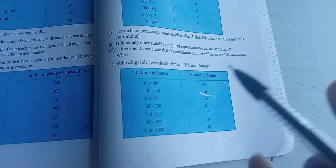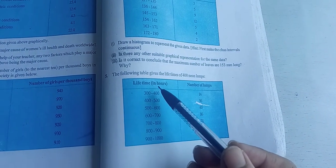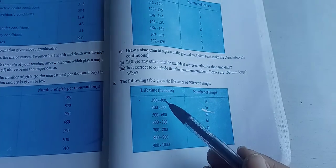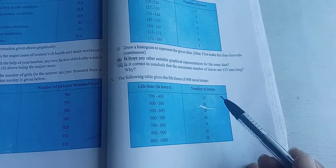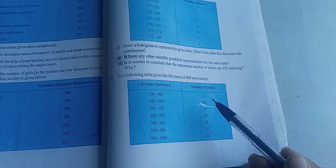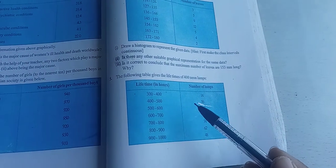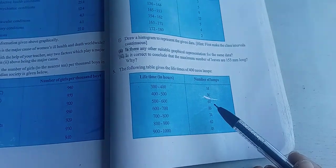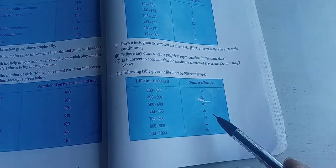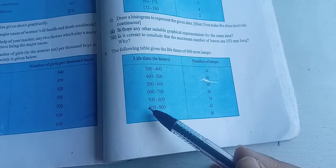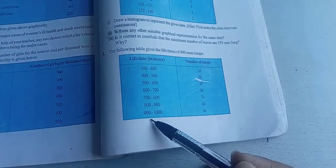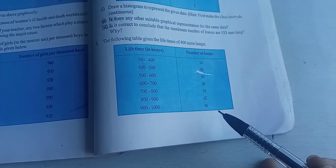Now it is given to you, lifetime of the 400 neon lamps. Lifetime in hours 300 to 400, number of lamps are 14. 400 to 500, that is 56. Then 500 to 600, lamps are 60. 600 to 700, 86. 700 to 800, 74. 800 to 900, 62. And 900 to 1000, that is 48.